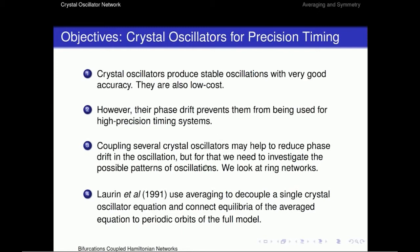Now, one thing that people did when they studied just one crystal oscillator in Lorraine et al, they used averaging to decouple the two frequencies of the one crystal oscillator. And so that actually enabled them to show that they had the right periodic oscillation they were looking for. In fact, they were connecting what they found in the equilibrium of the average system to prove the periodic orbit of the full system. So I'm going to return to this fact in a moment.